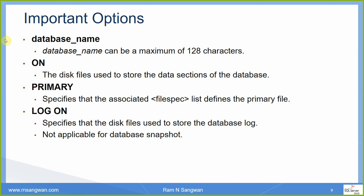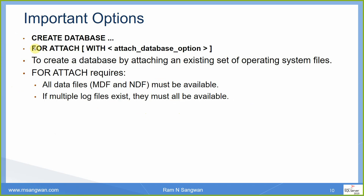The database name is self-explanatory. ON refers to the disk file. PRIMARY specifies the file associated with the primary file group. LOG specifies the location of the log files — not applicable for database snapshots because snapshots do not have a log. FOR ATTACH creates a database by attaching an existing set of OS files, requiring all MDF and NDF data files to be available, and all log files if multiple exist.